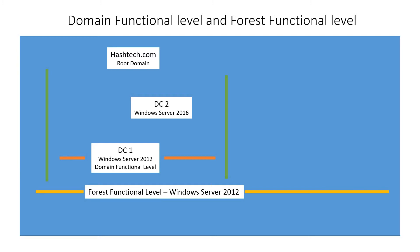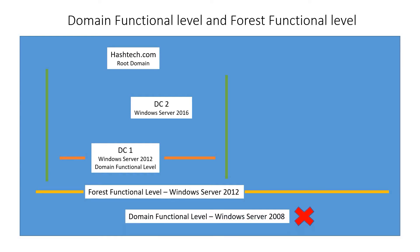The domain controller functional level can't go below the forest functional level. In this scenario, the forest functional level is set to Windows Server 2012, because domain controller one is installed at Windows Server 2012. The domain functional level cannot go below that — like Windows Server 2008 — it needs to be the same version as the forest functional level or above.